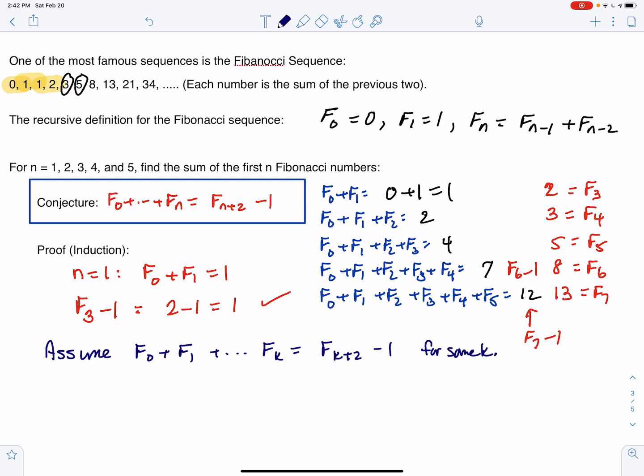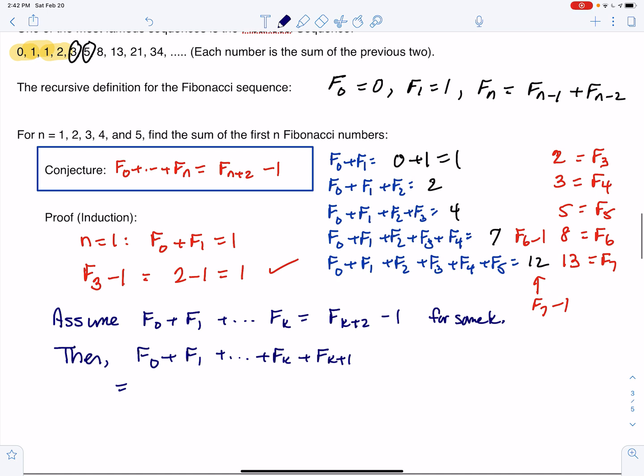So now what do we do for induction? Here's the inductive step. Then the sum of the Fibonacci numbers up through the k plus 1st Fibonacci number should be equal to, well, let's see.